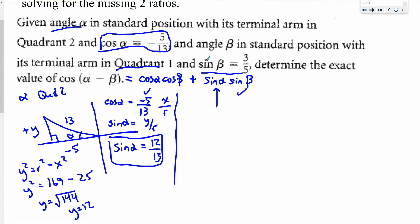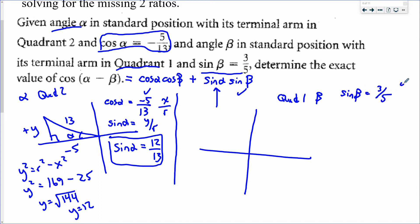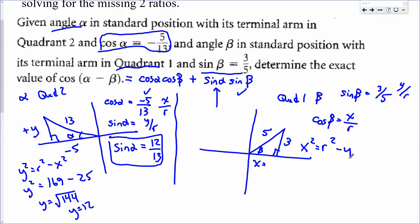For angle beta in quadrant one, sin β = 3/5 means y = 3 and r = 5. We need cos β = x/r. Using Pythagoras: x² = 5² − 3² = 25 − 9 = 16, so x = 4. Since quadrant one has positive x-values, cos β = 4/5. That's the second mark.